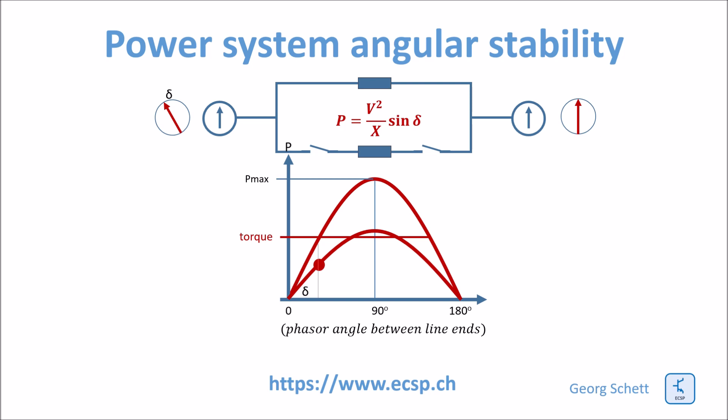So I could not anymore transmit the full power, maybe only half of it. And therefore, since I still would apply the full torque, I cannot change the torque of the machine very quickly. There would still be the full torque applied to this generator. Therefore, the new equilibrium, the phase angle would move up the curve,